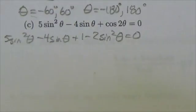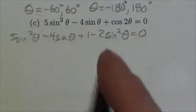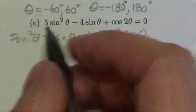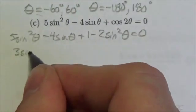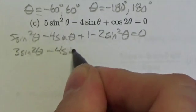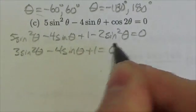This is going to become 5 sine squared of theta minus 4 sine of theta plus 1 minus 2 sine squared of theta equals 0. If I cover up everything else, this right here is the cosine of 2 theta. Now I'll put these together. 5 sine squared minus 2 sine squared gives 3 sine squared of theta minus 4 sine of theta plus 1 equals 0.